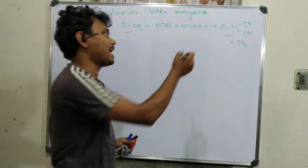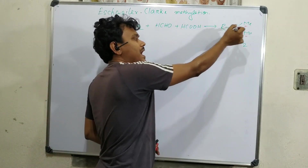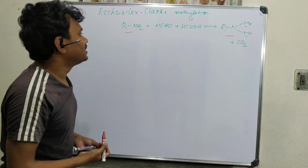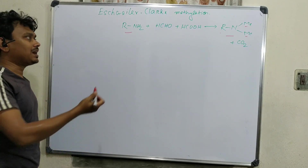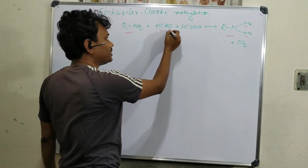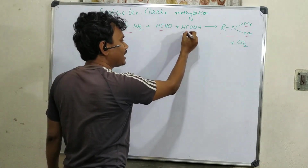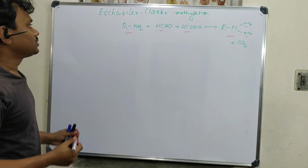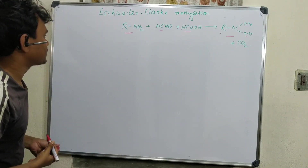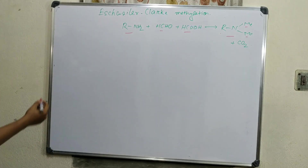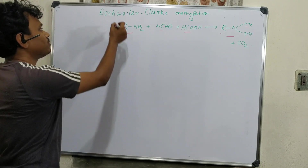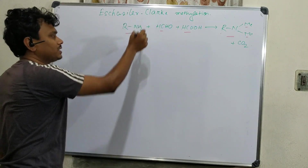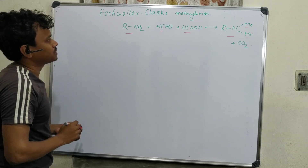This reaction involves an amine having one alkyl group and two methyl groups, prepared using a reductive alkylation strategy with formaldehyde and formic acid. This reaction was developed by scientists Eschweiler and Clarke, and based on their names it is called Eschweiler-Clarke Methylation.